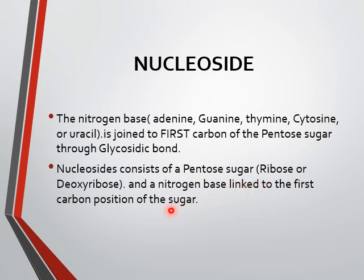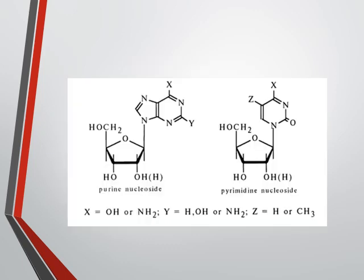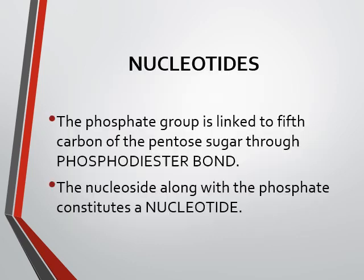The base may be adenine, guanine, thymine, cytosine, or uracil. In this structure, you can see the ribose sugar and at carbon number one you have the base — adenine or guanine — which are your purines. And pyrimidines include cytosine, thymine, or uracil. Next is the nucleotide. The phosphate group is linked to the fifth carbon of the pentose sugar through the phosphodiester bond.